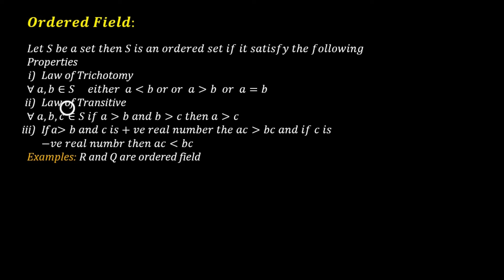The second property is law of transitive or transitive law. To define the transitive law, we take three elements A, B, and C from a non-empty set S. And if A is greater than B and B is greater than C, then it means that A is greater than C. It is just like when 2 is greater than 3 and 3 is greater than 4, which means that 2 is greater than 4. So this is law of transitive.